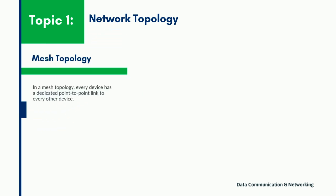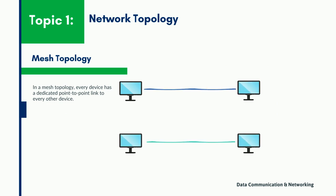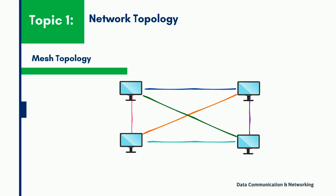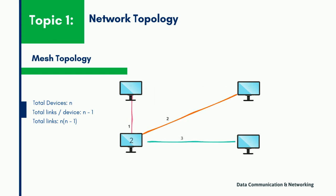In the mesh topology, each and every device has a dedicated point-to-point link to every other device, which allows most transmission to be distributed even if one of the connections goes down. If the total number of devices in the network is n, the total number of links per device is n-1, and the total number of links within the network will be n(n-1). In our example, if there are four devices, each device has at least three links.